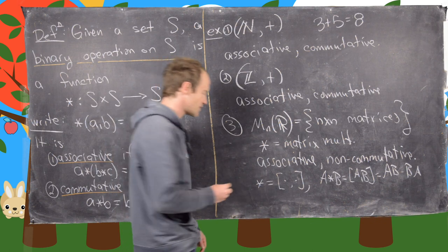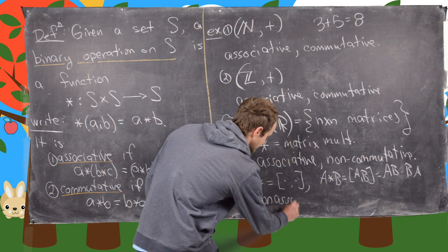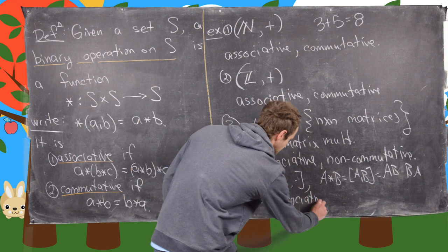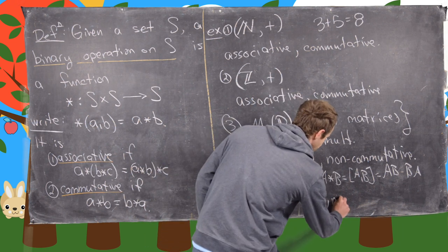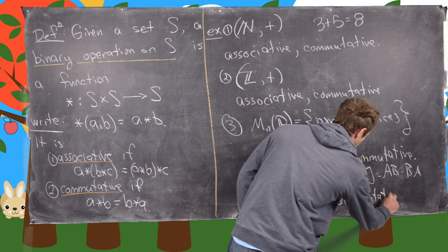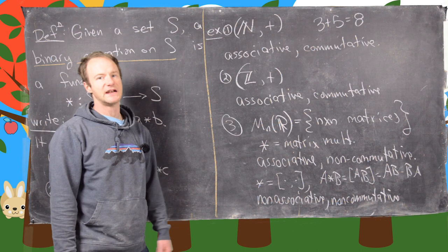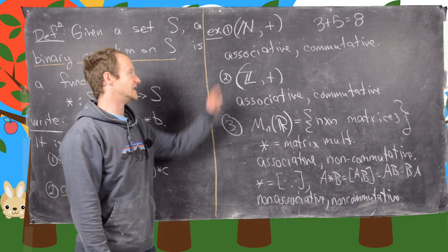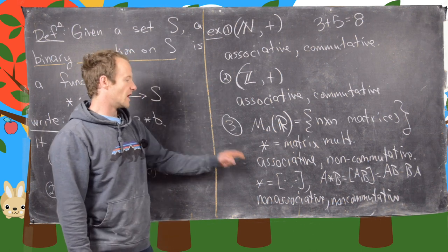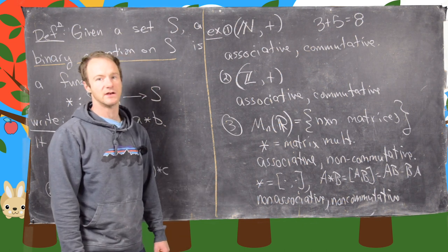And now you can check that this is in fact non-associative and also non-commutative. So it's easy to find an example of an operation that is associative and commutative, associative and non-commutative, and non-associative and non-commutative.